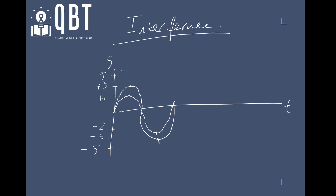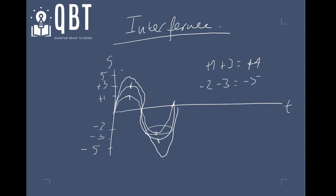So this is coming to minus two, this is coming to minus three, and this is coming to plus one and this is coming to plus three, so the result would be plus four. And then the result would be minus five down here — plus one and plus three is plus four, and minus two and minus three is minus five — because the crests align with each other. So you get this constructive interference.